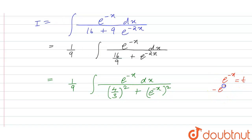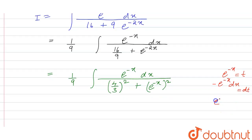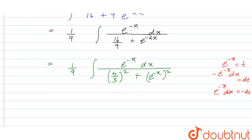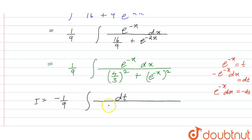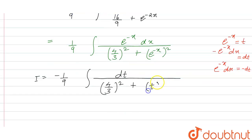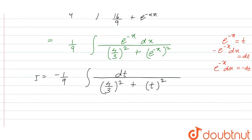If we put e raised to power minus x equal to t, then minus e raised to power minus x dx equals minus dt. Substituting, we have I equal to 1 by 9 times the integral of minus dt in the denominator, with 4 by 3 whole square plus t whole square.